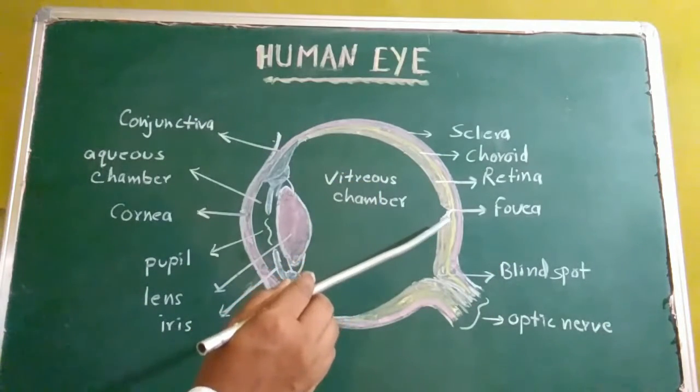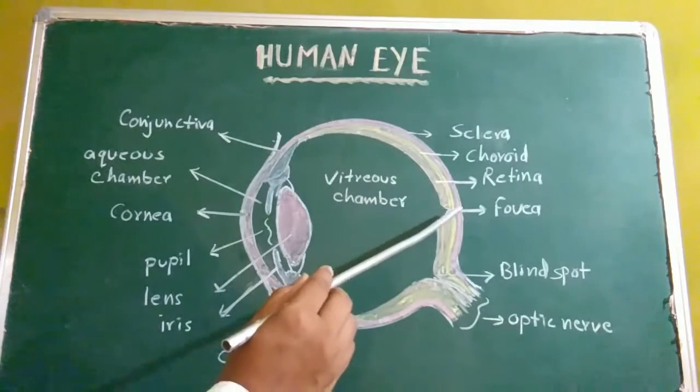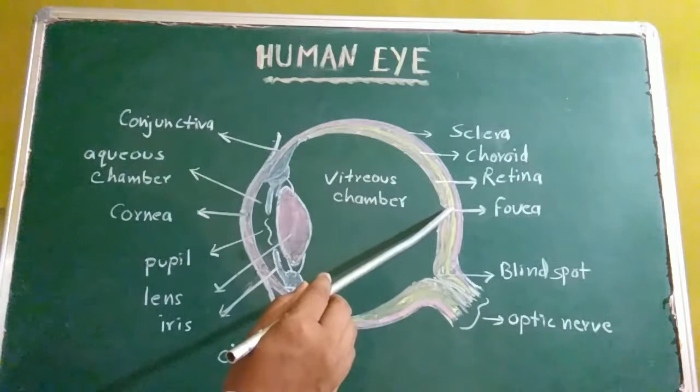There is a yellowish pigmented spot called macula lutea with a pit called fovea. It is the place where the clear image is formed.